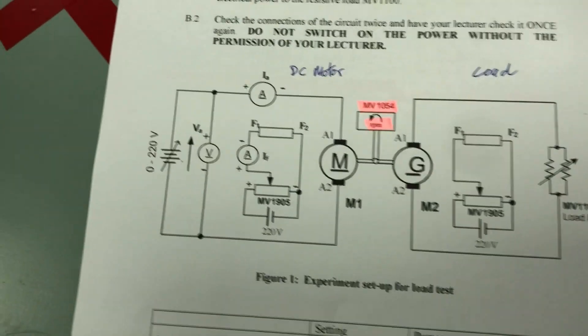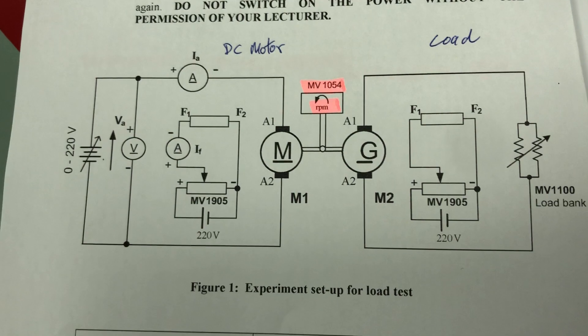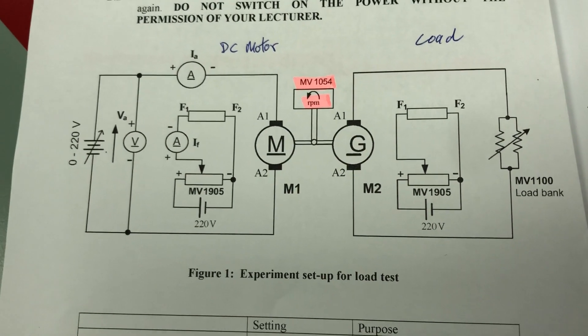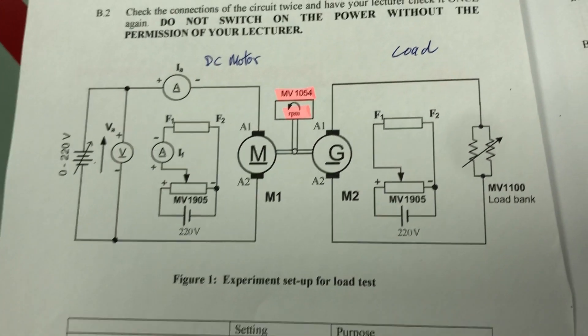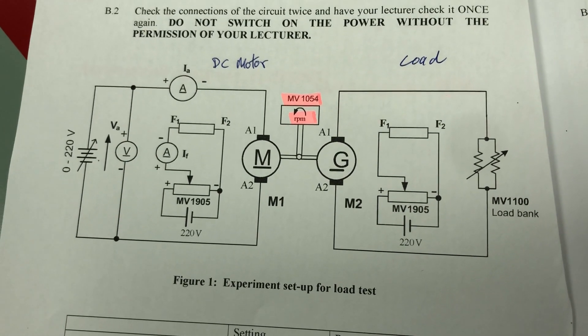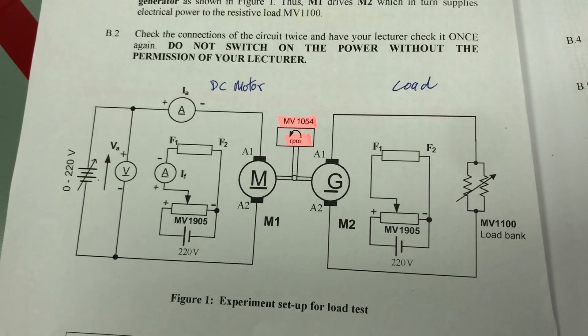So this is the setup. Just like the first experiment. The motor is on the left side, M1. And M2 is the generator.